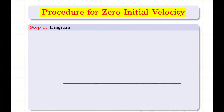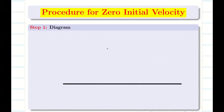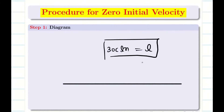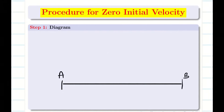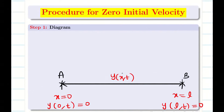Step 1 is the diagram. First, let us draw the diagram of the string. They will give the length of the string as 30 centimeters, 10 meters, or 5 meters, etc. Always assume whatever length is given as l, and substitute the actual value at the end of the problem. One side is point A at x equal to 0, and the other side is B at x equal to l. The displacement function is represented by y of x comma t. At both ends of the string there is no displacement, so y of 0 comma t equals 0 and y of l comma t equals 0.